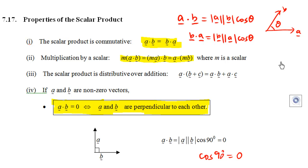Third property: the scalar product is distributive over addition. That means a dot (b plus c) is the same as a dot b plus a dot c, just like what you do for addition and multiplication for numbers.